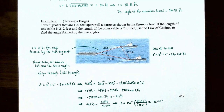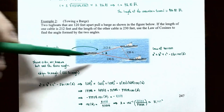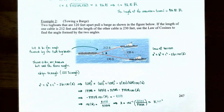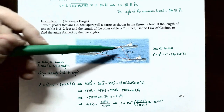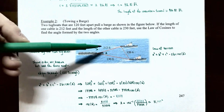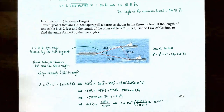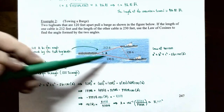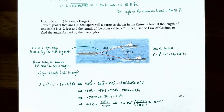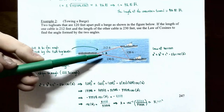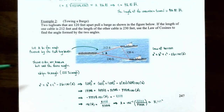Example two: towing a barge. Two tugboats 120 feet apart pull a barge. One cable from tugboat to barge is 212 feet, the other is 230 feet. We need to find the angle formed between the two cables. This is a side-side-side (SSS) triangle — we know all three sides but none of the angles — so we must use the law of cosines.